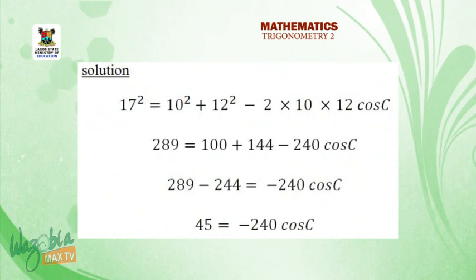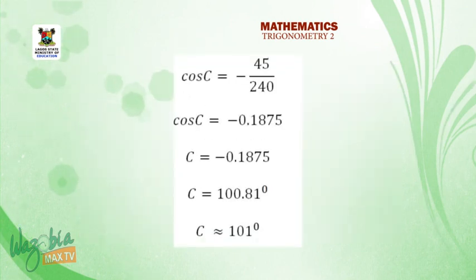So the one that will now be outside is the side that is opposite to the angle you are looking for. We are looking for angle C now, which is the largest angle. And the corresponding side is 17. So we just have 17 squared equals 10 squared plus 12 squared minus 2 times 10 times 12 cos C. So there we have 289 equals to 100 plus 144 minus 240 cos C. So if you make cos C the subject of the formula there, we have cos C equals minus 45 over 240, which is minus 0.1875 from our calculator. Find the cos inverse of it.